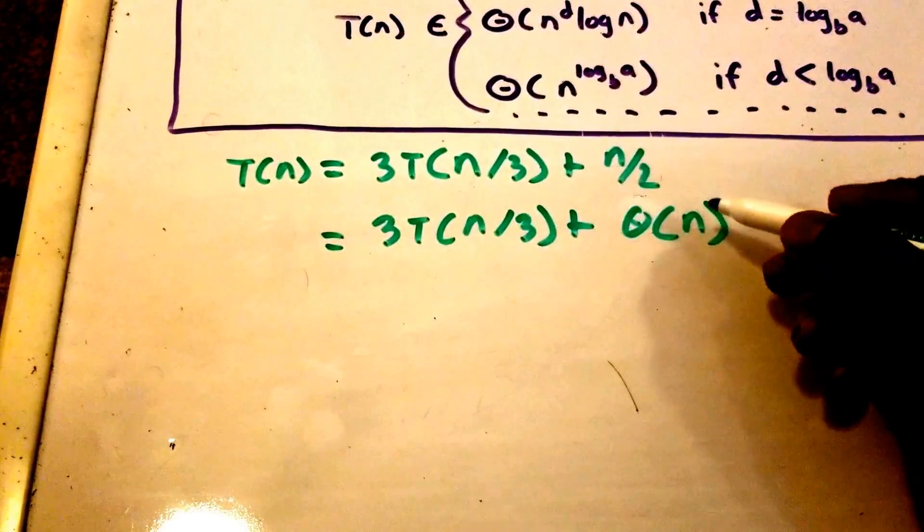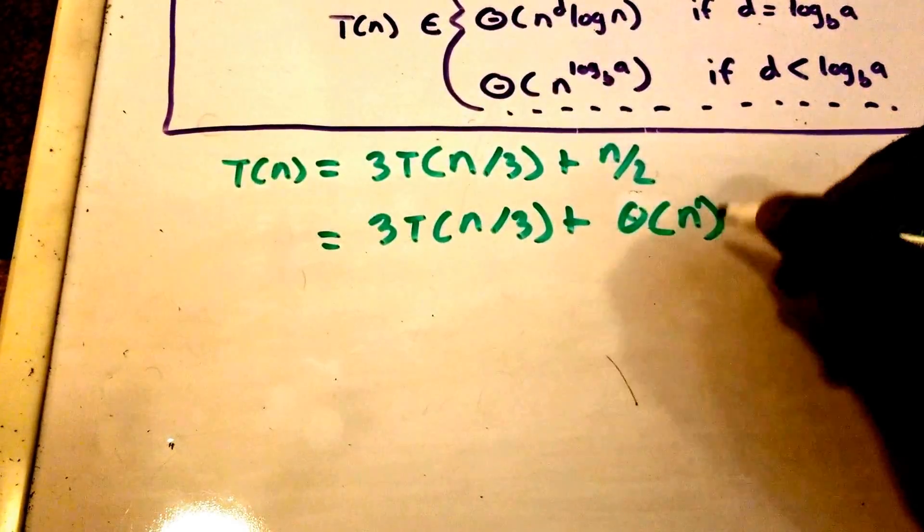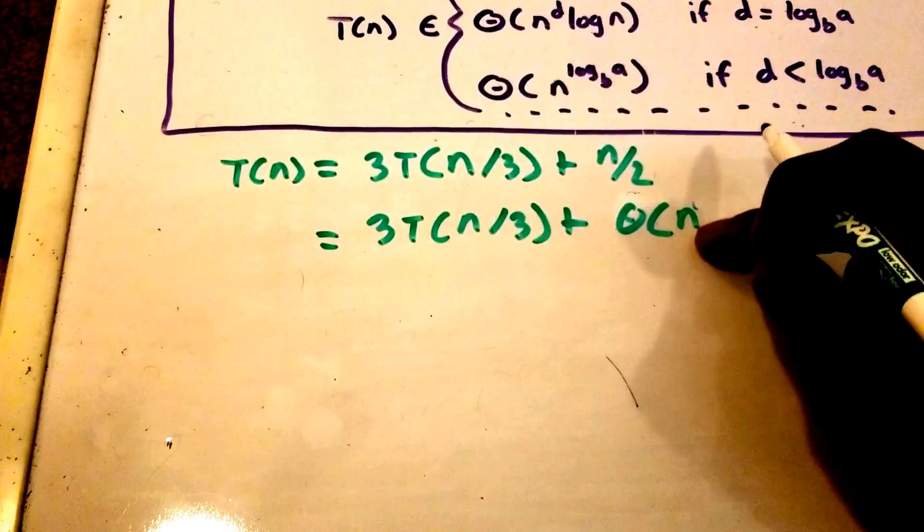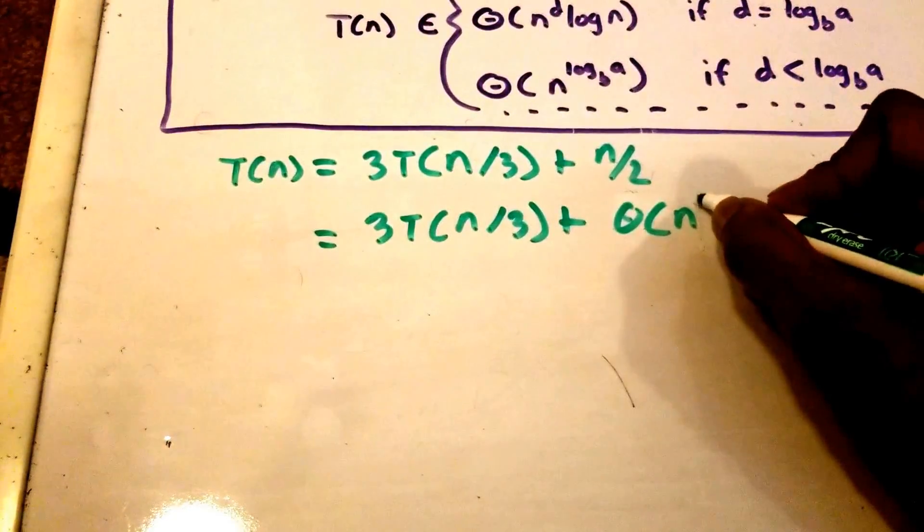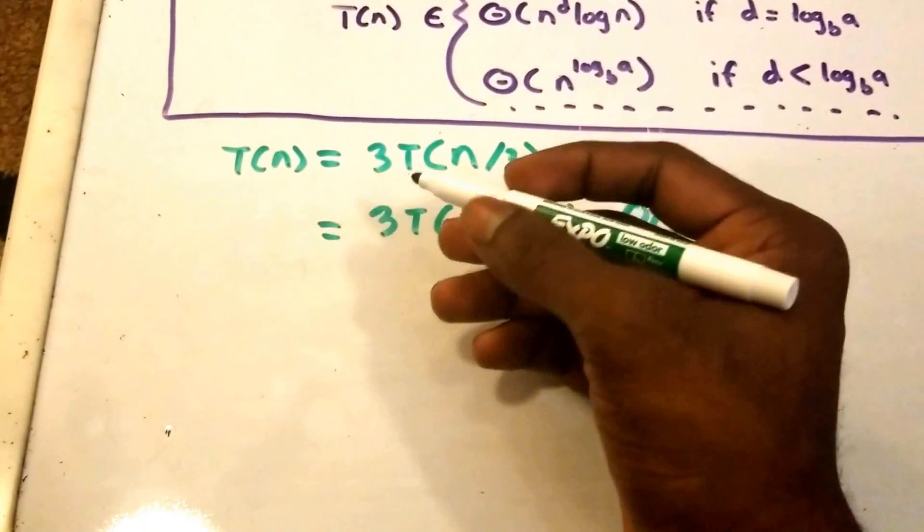Alright, so what is our d value? Our d value is here. This is actually theta of n to the power of 1, right, an implicit 1 there. Let me rewrite this. And so now we have our value.